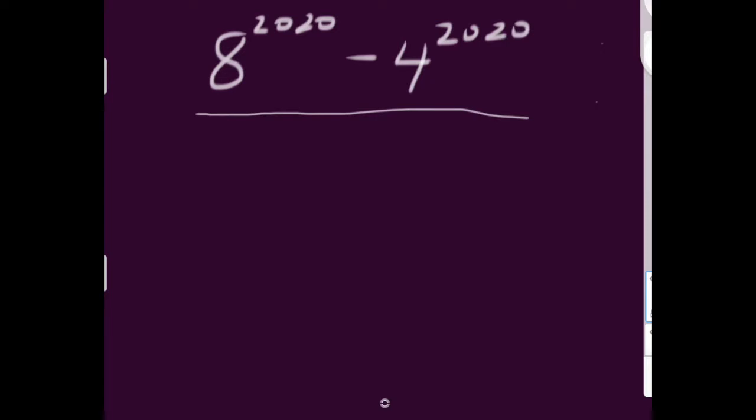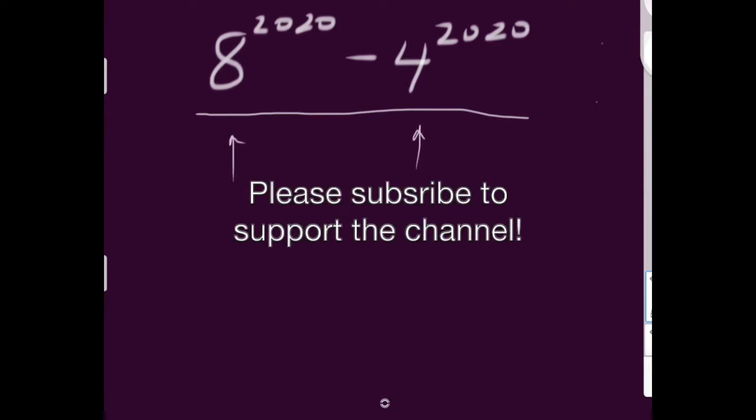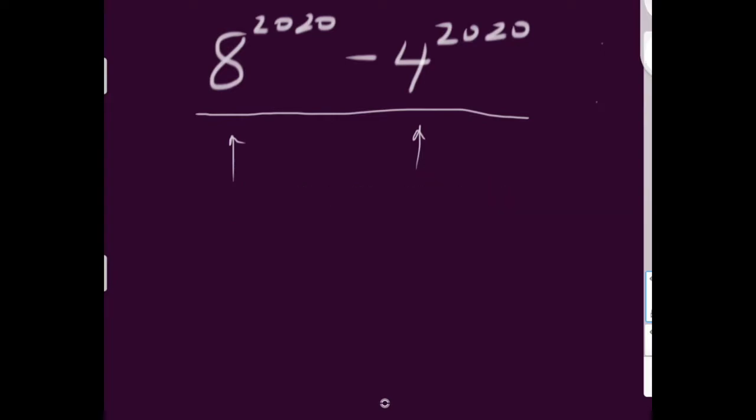So we can start by focusing on each of the components individually. We've got 8 to the power of 2020. We can start out with that. And the key to these problems is finding a repetition in the final digit. Let's start out with 8 to the power of 2020. 8 to the power of 1 is obviously 8. 8 squared is 64. Cubed is 512. And to the fourth is 4096.